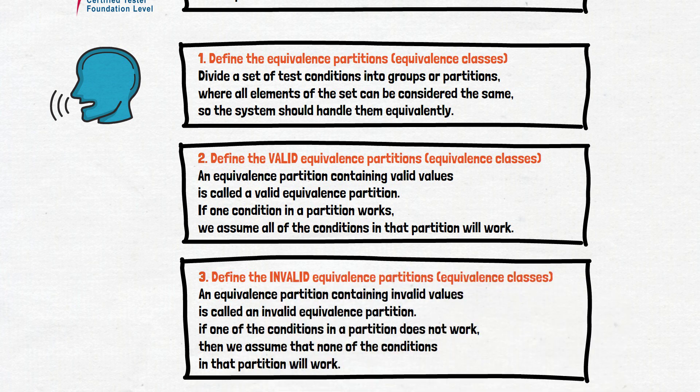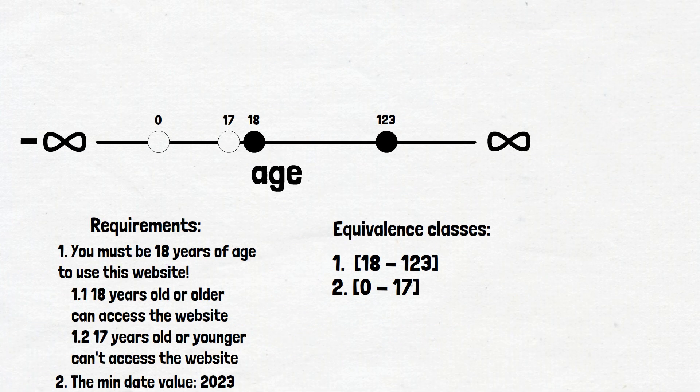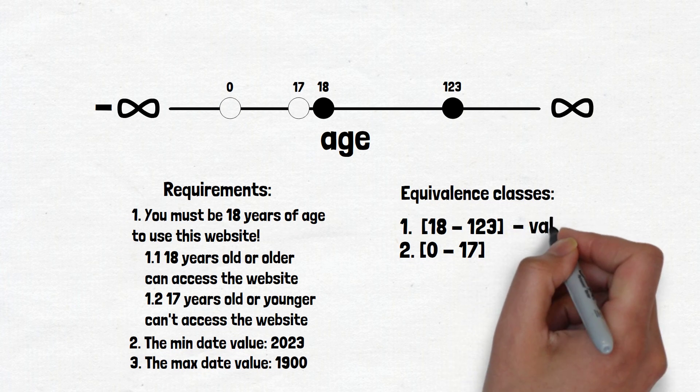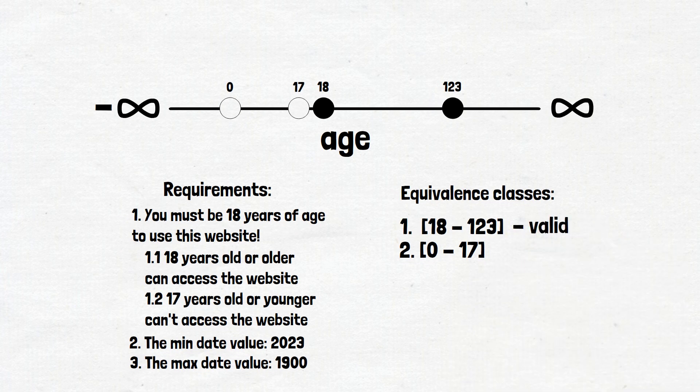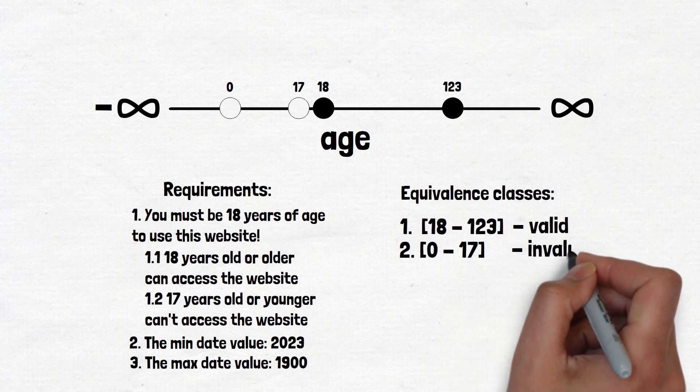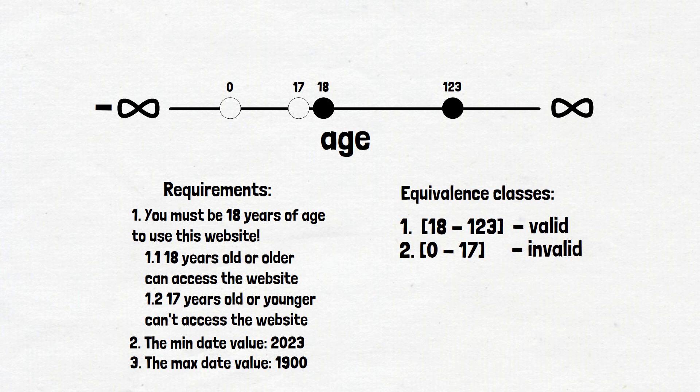But in simple words, this means that we need to define the valid and invalid equivalence classes. So let's do it. And in this kind of example, it is easy. We have only two partitions. One is valid people from 18 to 123 years old. And another is invalid people from 0 to 17 years old.